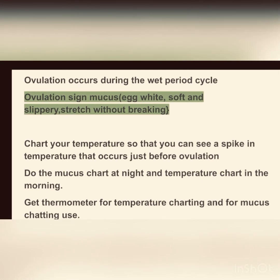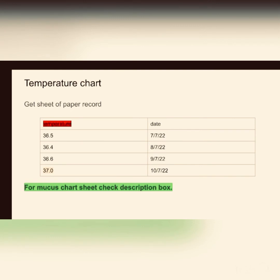Ovulation mucus is egg white — soft, slippery, and stretchy without breaking. Chart your temperature every day of your cycle. You can get a thermometer from a pharmacy store along with a booklet. Take your temperature immediately after waking up in the morning. For mucus charting, do it at night before you go to bed — not in the morning — because activities during the day, like arousal or sex, can affect what you observe.